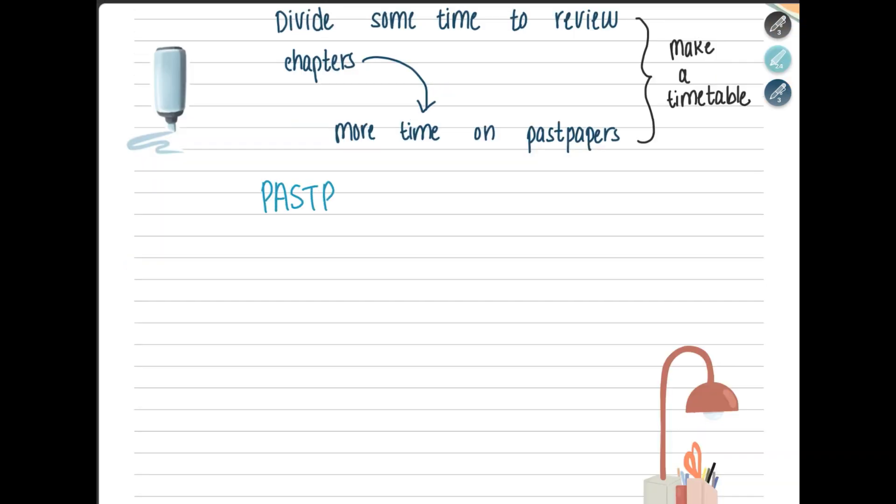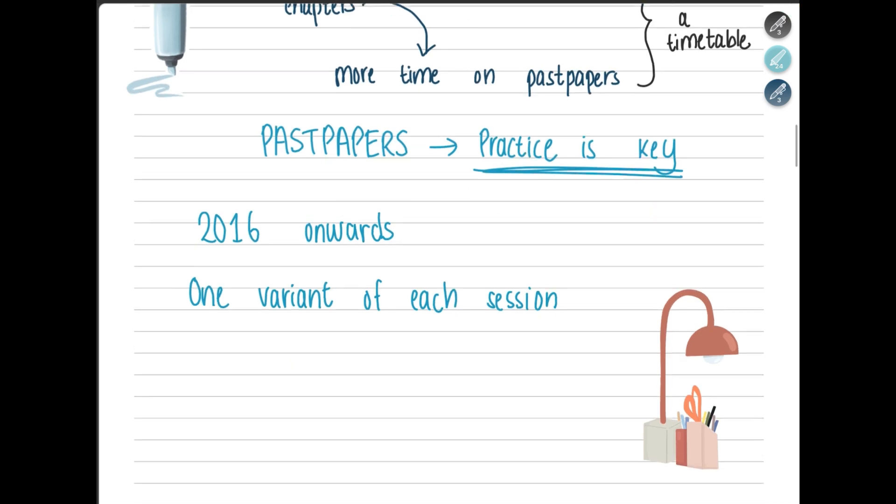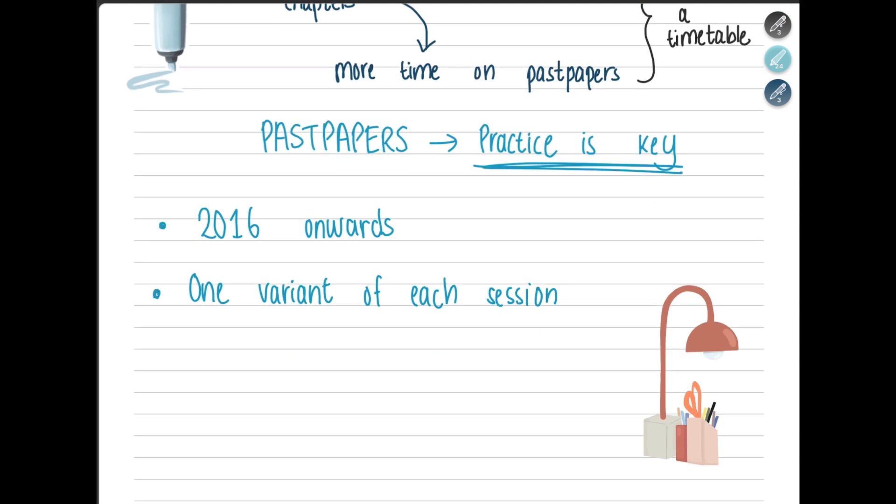Let's move on to past papers. To ace paper 2, remember practice is key. Practicing will help give you an idea of how much you can solve in specific time. Focus on 2016 onwards and try to do one variant per each session because if they're in the same variant, the questions are often repeated.